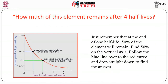How much of an element remains after 4 half-lives? As defined, one half-life means half of the element remains. After two half-lives, again half — so 25%. After three half-lives, 12.5%. After four half-lives, 6.25%. In this way, the half-life is defined. Half-life may be expressed in years, days, seconds or minutes.